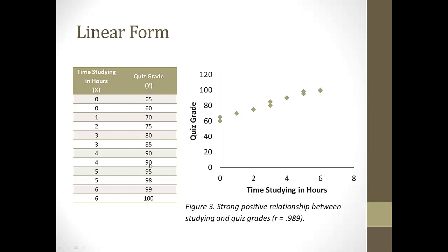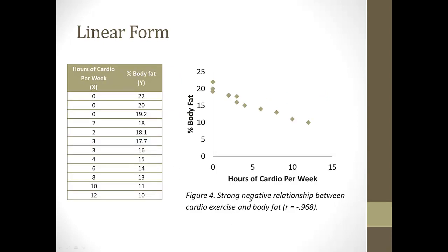You're seeing gradual increases in y as x increases. Here's another linear relationship — it's negative because as you exercise more, you tend to have less body fat. The two variables are changing in opposite directions. When you plot that in a scatter plot, you see a downward slope: higher values of x (hours of cardio) are associated with lower values of y (body fat). It's strong because the data fits a straight line and you see a consistent decrease in body fat as hours of cardio per week increase.